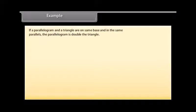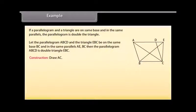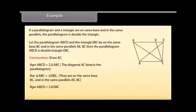Let's prove an example. If a parallelogram and a triangle are on the same base and between the same parallels, the parallelogram is double the triangle. Let parallelogram ABCD and triangle EBC be on the same base BC and between the same parallels AE and BC; then parallelogram ABCD is double triangle EBC. Construction: Draw AC. Since AC bisects the parallelogram, parallelogram ABCD is double triangle ABC. But triangle ABC is equal to triangle EBC because they are on the same base BC and between the same parallels AE and BC. Therefore, parallelogram ABCD is also double triangle EBC. Hence proved.